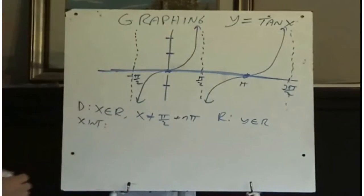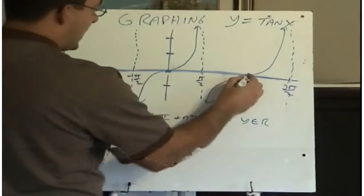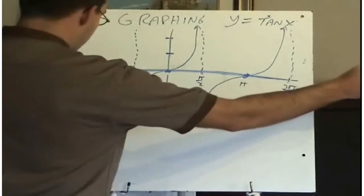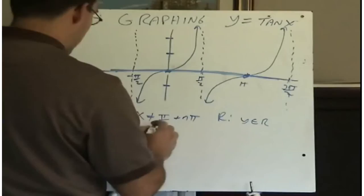What's the x-intercept? Well, we've already talked about that. Zero, pi, two pi, three pi, four pi. So the x-intercept we could say is zero plus any multiples of pi.